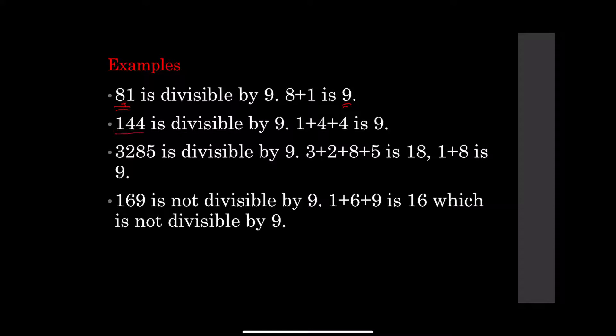Now 144 is divisible by 9. If we add 1 and 4 and 4, the answer will give us 9, and 9 is divisible by 9.